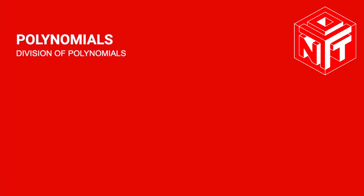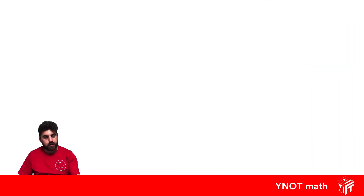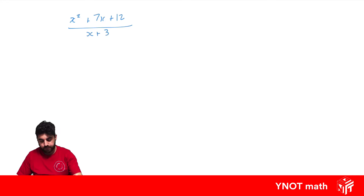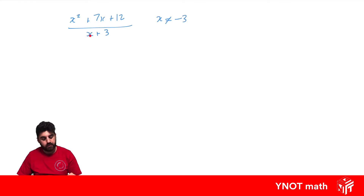Division of polynomials — here we're going to look at how we can divide polynomials with other polynomials. Our first question is x squared plus 7x plus 12 divided by x plus 3, where x cannot equal minus 3, because if x equals minus 3 we'll be dividing by 0, which we can't have.